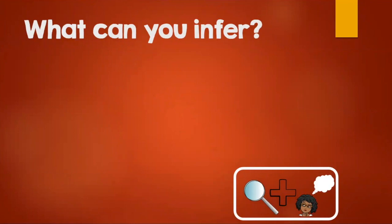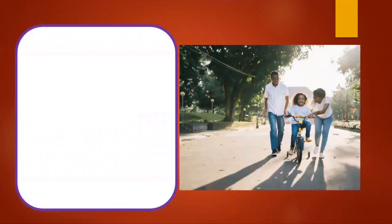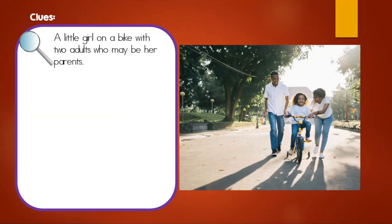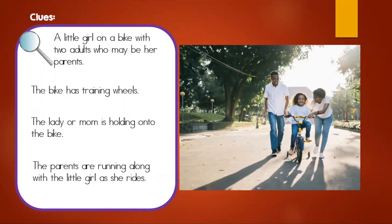What can you infer, boys and girls? Looking at this picture, think about the clues that you see in the picture, along with what you may already know, to come up with an inference. We're going to pull out the clues or the details that we see in this picture. I can see there is a little girl on a bike with two adults who may be her parents. The bike has training wheels. The mom is holding on to the bike, and the parents are running along with the little girl as she rides. Those are awesome clues, boys and girls.